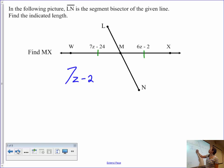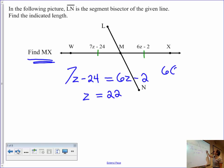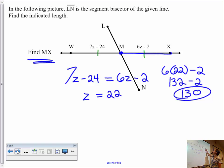So 7z minus 24 is equal to 6z minus 2. All right, so I'm going to skip the individual pieces of the algebra, and I'm just going to go ahead and solve it. 6z goes to the other side, giving me z. 24, I'm going to add it to the other side, giving me 22. So we've got our final answer of z equals 22, but our task is to find MX. So we're going to plug that back in. 6 times 22 minus 2. This is 132 minus 2, and I get 130. So my total distance or length from M to X is 130.